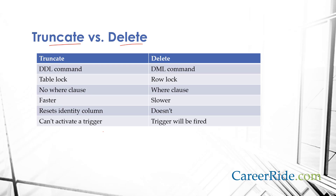Explain the difference between truncate and delete command. Truncate is a DDL command; delete is a DML command. Truncate locks the entire table, whereas delete locks the rows to be deleted. A WHERE clause cannot be used with truncate, but we can use a WHERE clause with delete. Truncate is much faster. Truncate resets the identity column, whereas delete doesn't. Truncate cannot activate a trigger, whereas delete can activate a trigger.